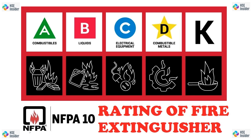The numerical rating for Class A fire extinguishers indicates the equivalent extinguishing capability in terms of water. For example, a 2A rating means the extinguisher has the equivalent extinguishing power of 2.5 gallons of water, and a 4A rating would indicate it has the equivalent power of 5 gallons of water. The higher the number, the greater the effectiveness against Class A fires. For example, a fire extinguisher with a 3A rating can effectively extinguish a fire involving ordinary combustibles such as wood or paper with a power equivalent of 3.75 gallons of water.